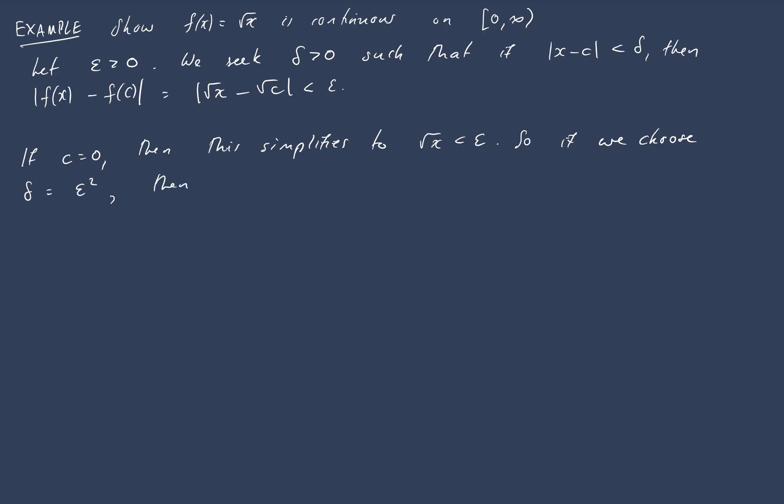Then if we start with our absolute value of x minus c is less than delta, that implies x is less than epsilon squared, which implies the square root of x is less than epsilon as required.